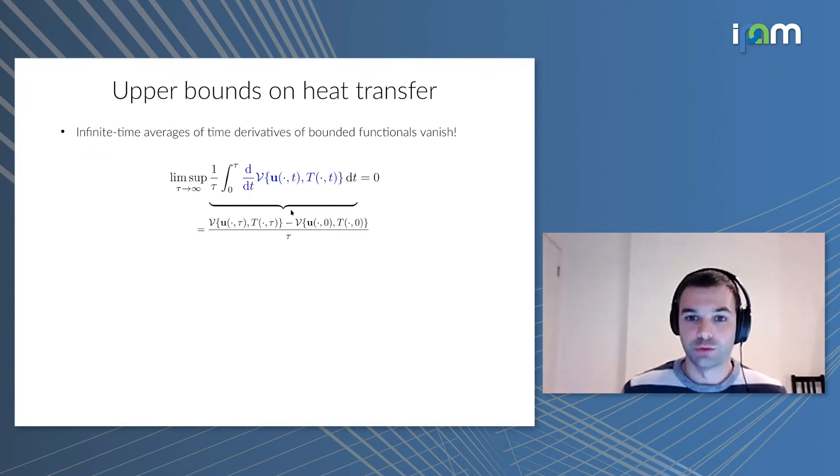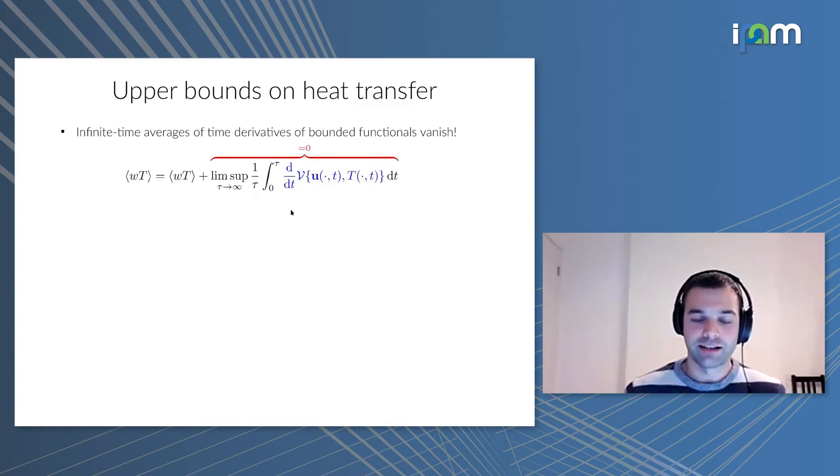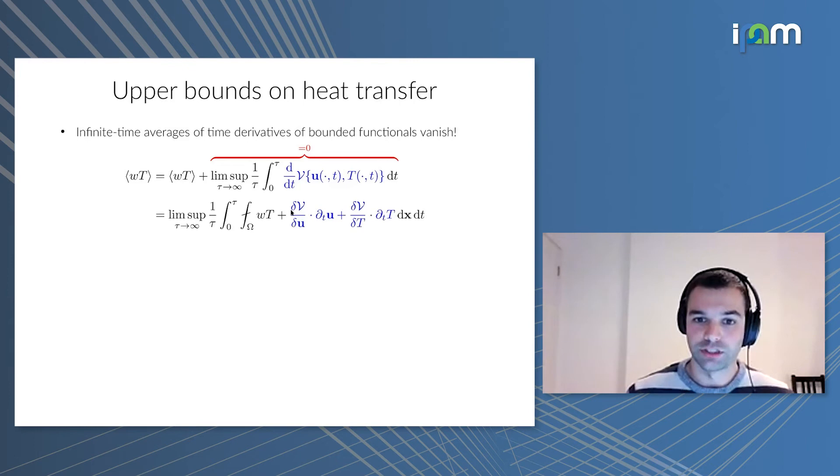To prove this bound, we need to do some math, and the starting point is perhaps something quite simple you maybe haven't thought about before. Suppose I take a function v of the flow velocity u and temperature, take the time derivative, and then average. The result is exactly zero. This is straightforward application of the fundamental calculus: I can integrate this time derivative, I get v times tau divided by time tau. The numerator, if v is bounded, remains bounded, whereas the denominator goes to infinity, so the limit is zero. Now I can cleverly disguise zero in this form and add this time average to the vertical heat transport to obtain an identity. Then using the chain rule, I rewrite this as a space-time average where I have the time derivative of u and the time derivative of T.